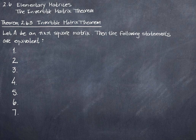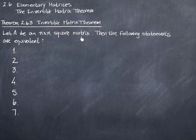This should be a pretty quick video on the very last item in this section, the invertible matrix theorem. The invertible matrix theorem has one condition, and that is that A is a square matrix. So we have a matrix A, and it's a square matrix with dimensions n by n, which means it could be 2 by 2 or 12 by 12, as long as the two values are the same.